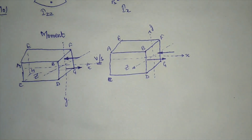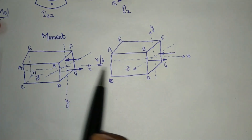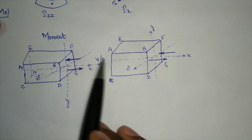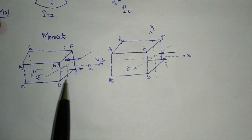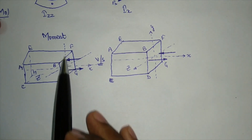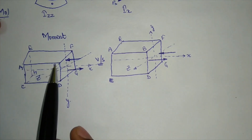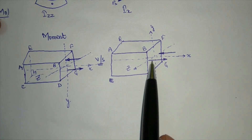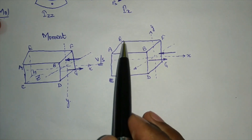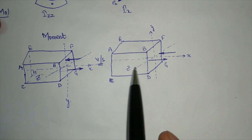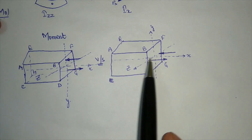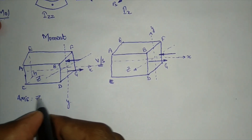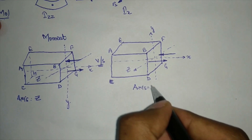Consider two cases where the force is normal along the x-axis — so both give a moment. In the first case, the couple forms along the y-axis, acting in the plane ABCD. In the second case, the couple is parallel to plane AEFB because the forces act along the z-axis. So the axis of moment is Z in the first case and Y in the second case.